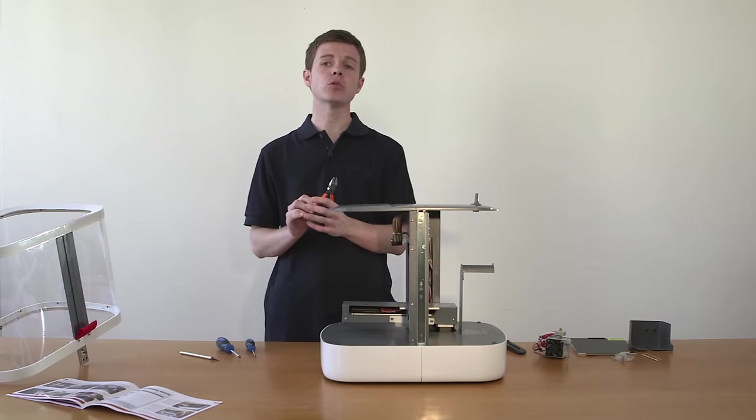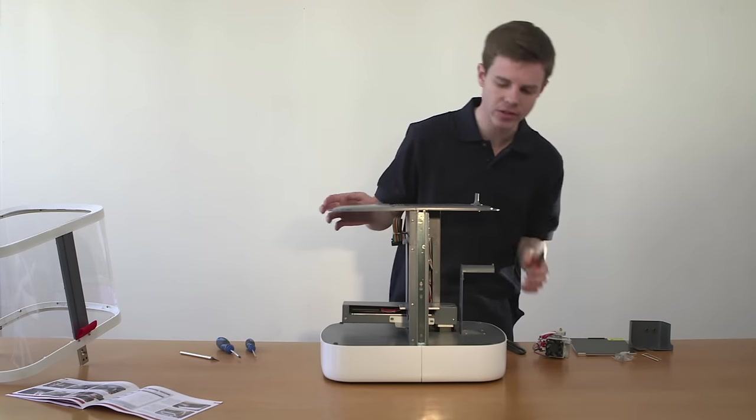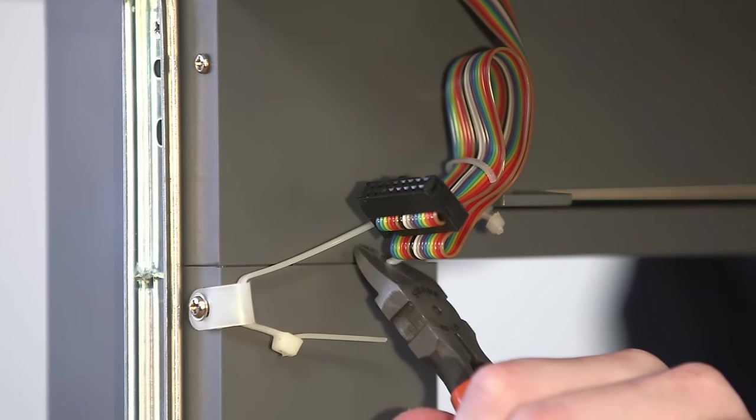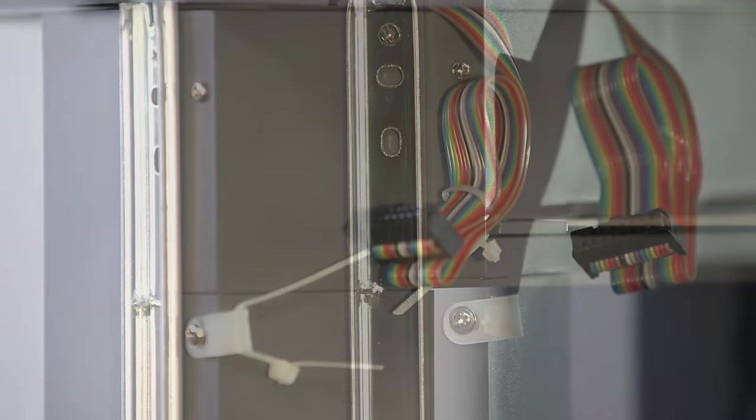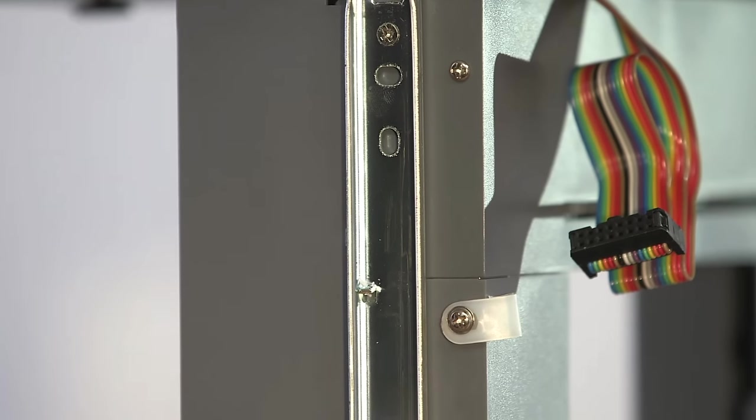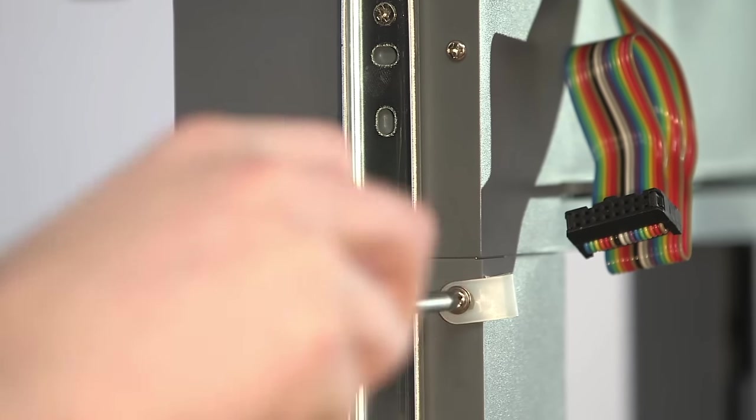Cut the cable ties from the multicoloured printhead cable. Take care not to snip through the cable itself. The plastic lug can also be removed from the gantry if you choose, but be sure to replace the screw and tighten it fully.